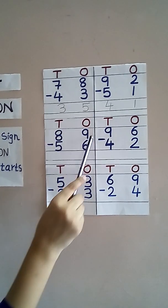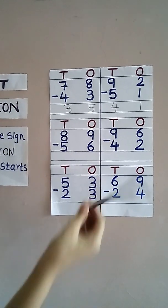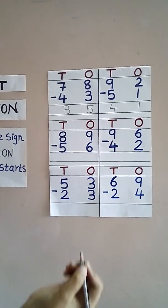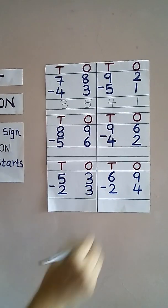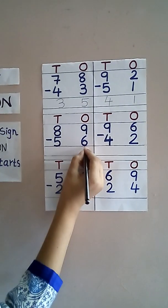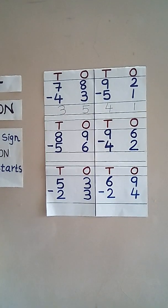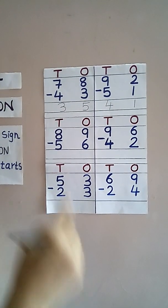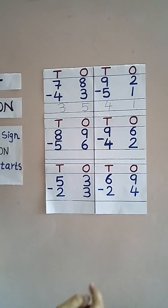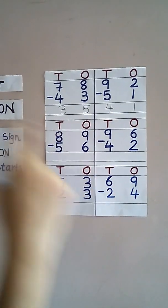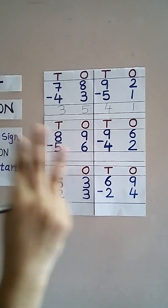Subtract 89 from 56. The ones digits: this is 9 and this is 6. We have to always start from the next number. What is the next number of 6? It is 7. We have to count from 7 up to this number — up till 9. So: 7, 8, and 9 — how many? 3. So write down 3.